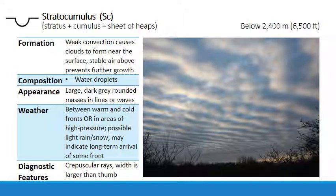Stratocumulus clouds are commonly associated with the warm sector — the area between a warm and cold front where a warm front has just passed through and a cold front is approaching. They might also be found in a basic area of high pressure and can last there for several days. If the air over the land is moist and hot enough, stratocumulus clouds may evolve into other types of cumulus clouds, or may get thick enough to produce light rain or snow. They may be seen at either the front or tail end of worse weather, so they may indicate storms to come.